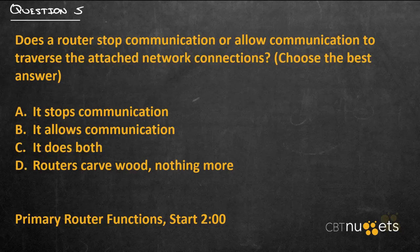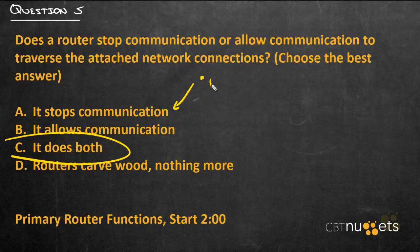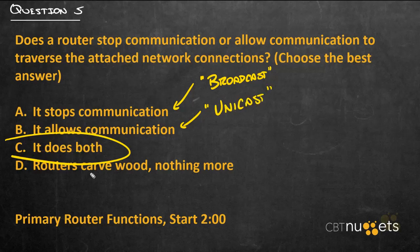Question number five: does a router stop communication or allow communication to traverse the attached network connections? Choose the best answer. The answer is C — it does both. It stops communication specifically related to broadcast traffic, keeping your network contained within your network so it doesn't spill over to other networks. But it allows communication specifically intended for the outside world, which is technically known as unicast traffic.